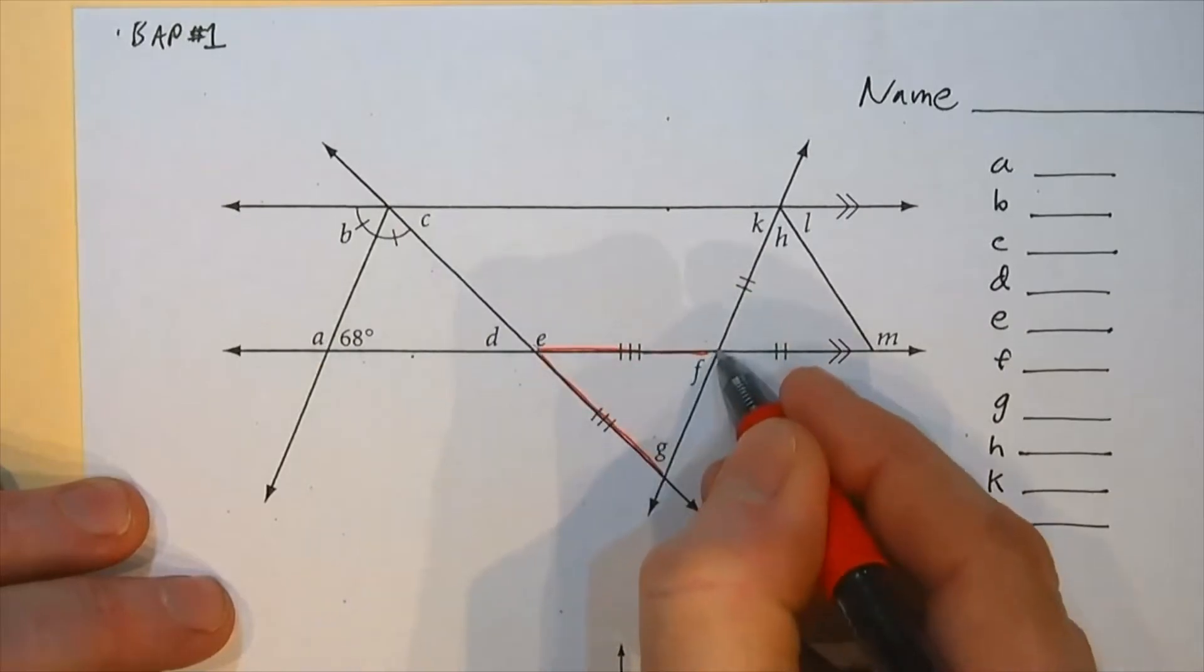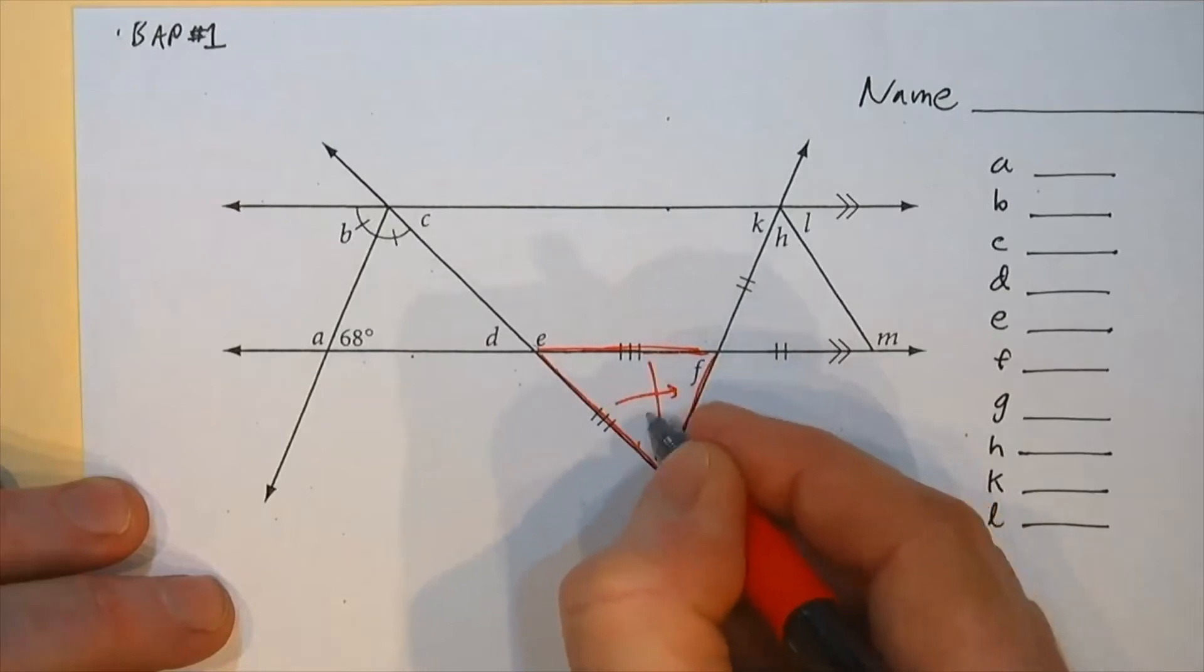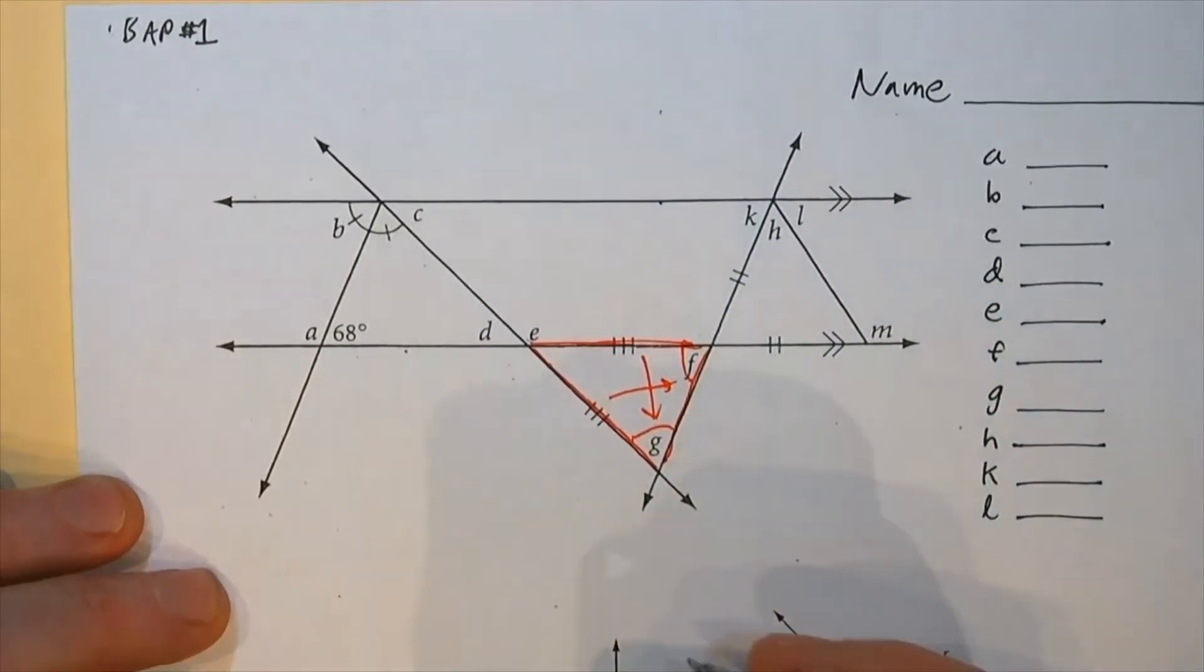Well, if these sides are the same, we must have an isosceles triangle. That means the base angles just go opposite. These two are the same. I don't know about that.